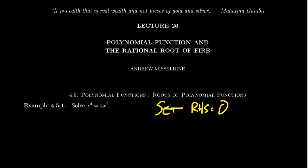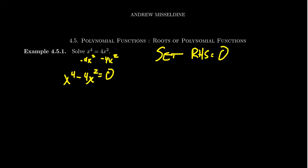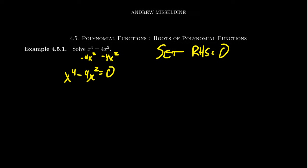For us, that means we'd subtract the 4x squared from both sides. So our equation x to the fourth equals 4x squared becomes x to the fourth minus 4x squared equals zero. So once the right-hand side is equal to zero, if we can factor the left-hand side, then we can apply the zero product property to help us solve this equation.